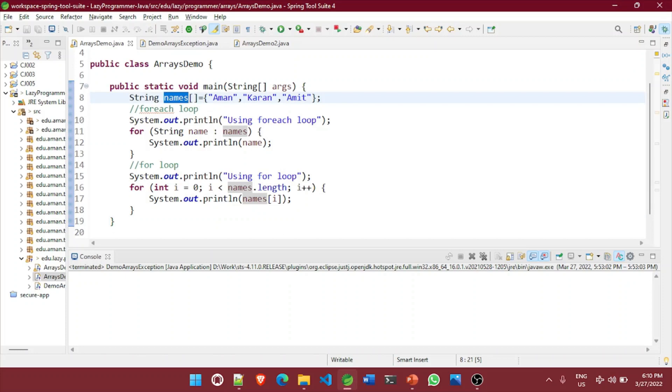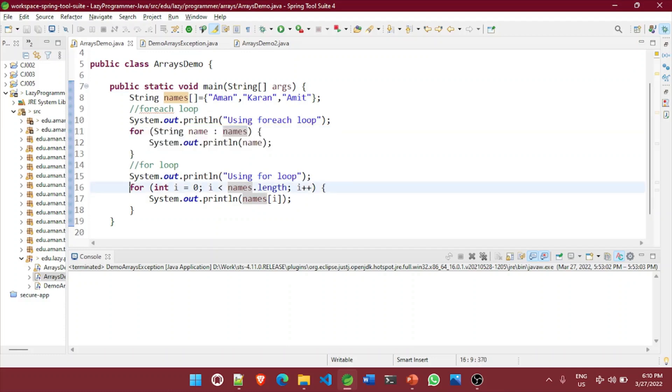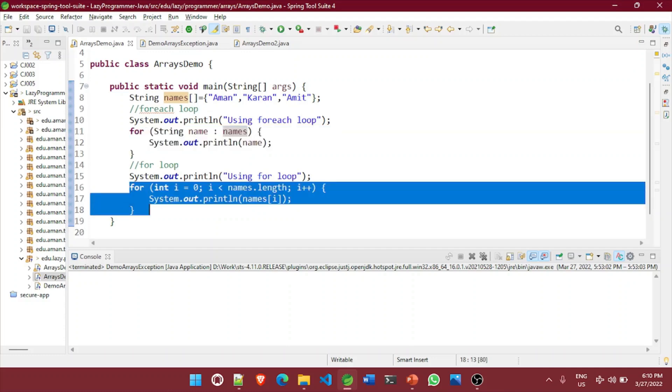So the first one is using for each loop. So this is the syntax of for each loop. It will take a list of names and one by one it will iterate through and we are printing it on the console. In this specific kind of loop, index has no role to play. But in case of the standard for loop using that index variable, so this is how we can iterate through the array.